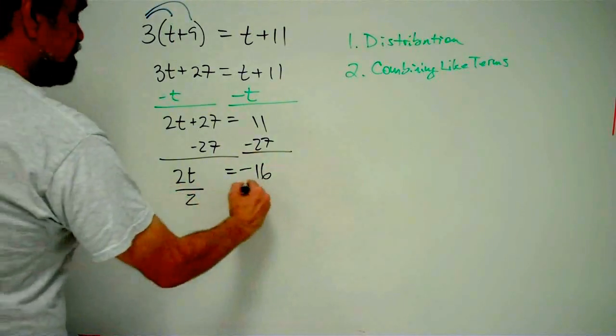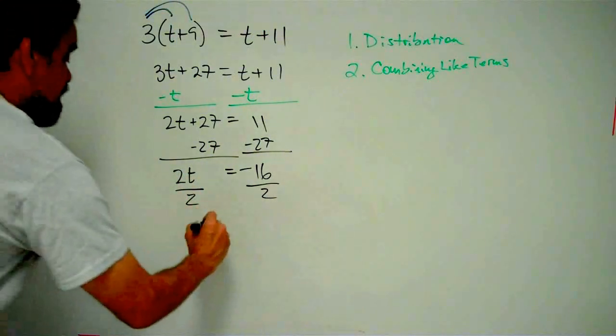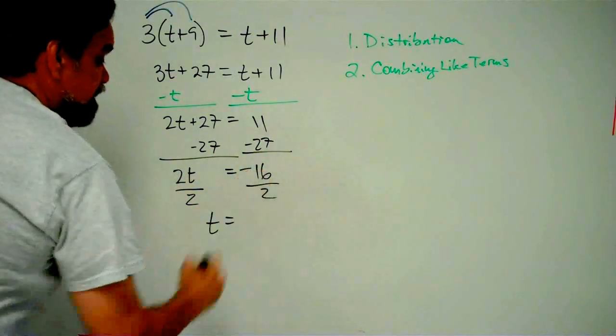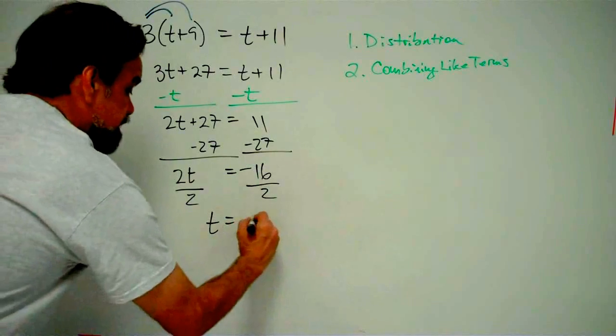I'm just going to divide both sides by 2, because that undoes the multiplication. And we get t equals negative 16 divided by 2, which is negative 8.